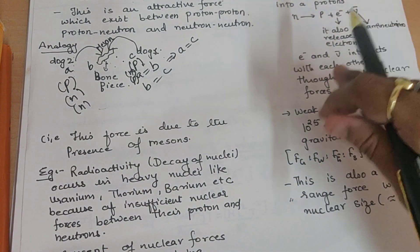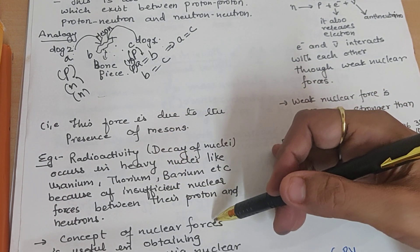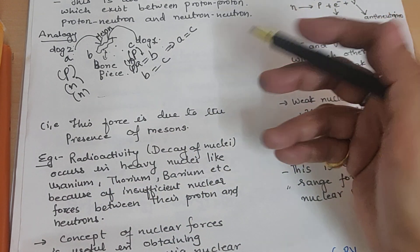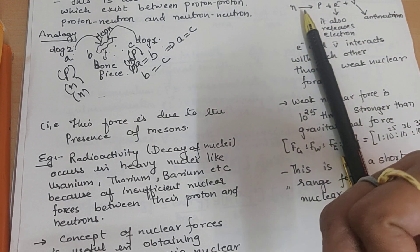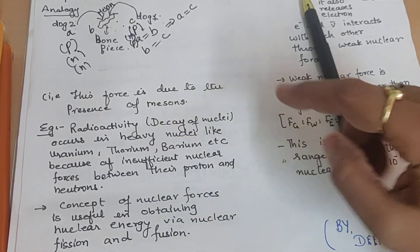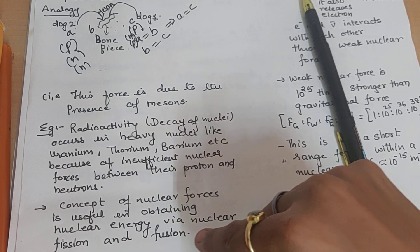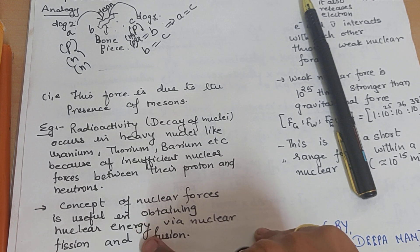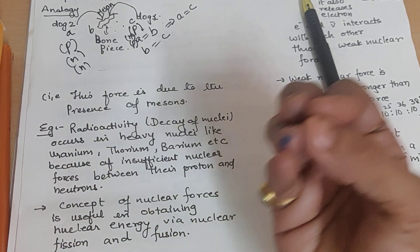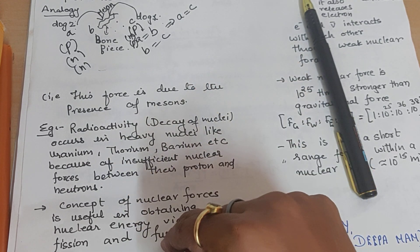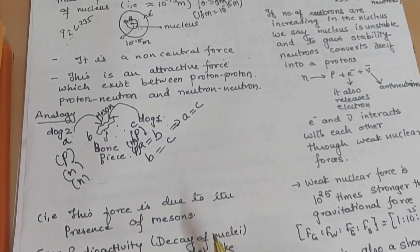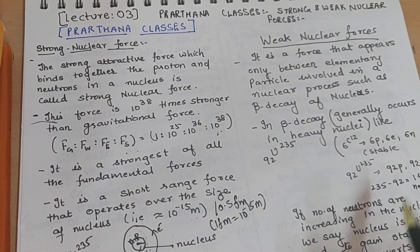Let's look at examples of where strong nuclear forces are observed. One example is radioactivity — when heavy nuclei like uranium, barium, thorium, or plutonium decay, it is because of insufficient nuclear forces, so they emit radiation. That is due to the nuclear forces. Second, the concept of nuclear forces is also useful to obtain nuclear energy via nuclear processes like fission and fusion. In fission, a heavy nucleus splits into smaller nuclei; in fusion, lighter nuclei fuse together into a bigger nucleus. So strong nuclear forces play a role here.